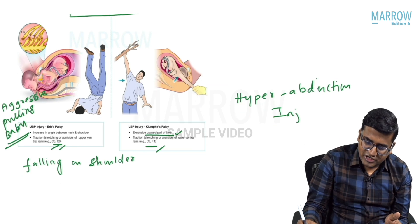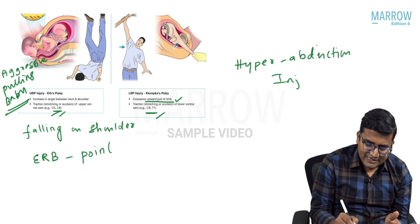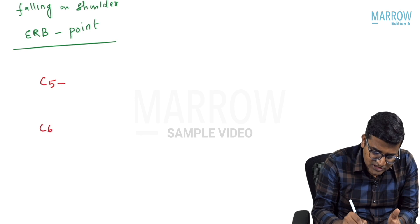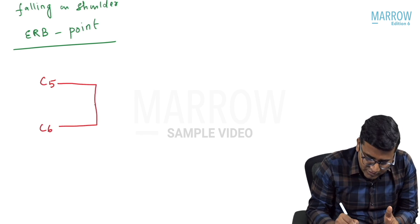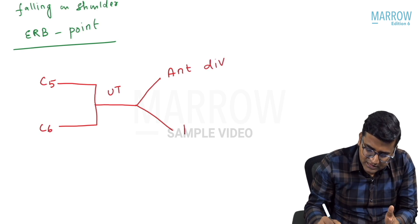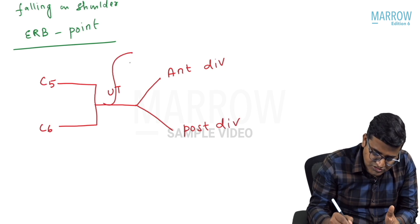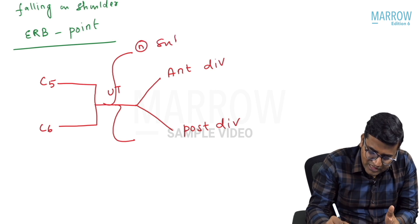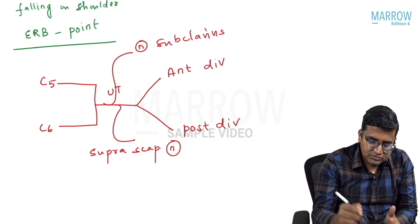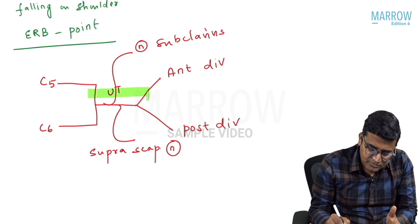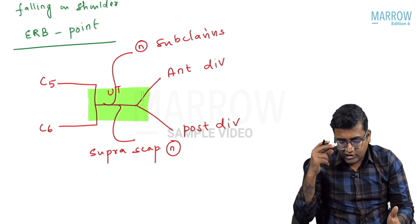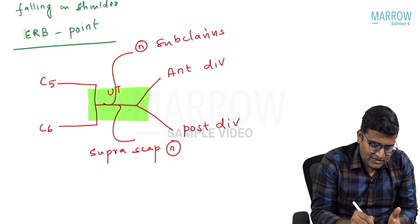In Erb's palsy, injury occurs at the Erb's point, which is the meeting point of six nerves: the C5 root, the C6 root, their junction forming the upper trunk, the anterior division, the posterior division, the nerve to subclavius, and the suprascapular nerve. These six nerves meet at Erb's point, and injury at this point leads to Erb's palsy.